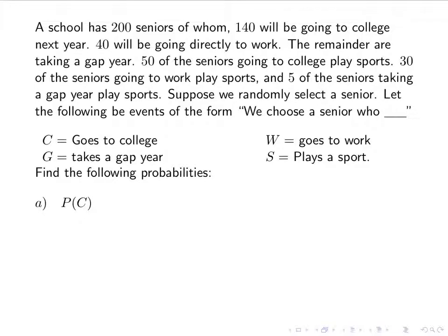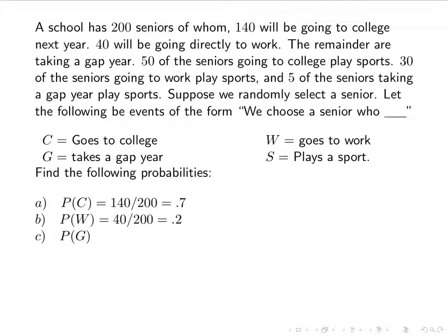The probability of C is 140 out of 200, which is 0.7. The probability of W is 40 out of 200, which is 0.2. The probability of G: the remainder taking a gap year is 200 minus 140 minus 40 equals 20 students, so 20 out of 200 gives a probability of 0.1.